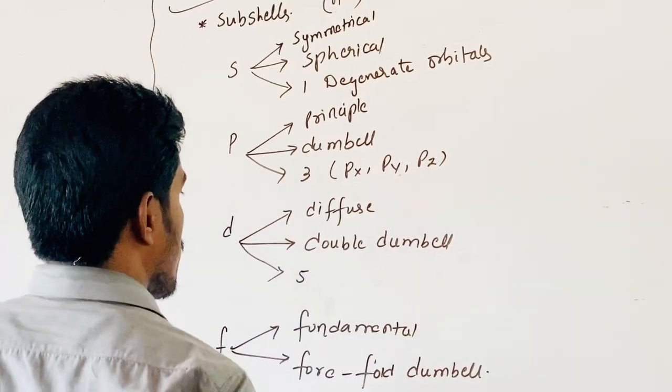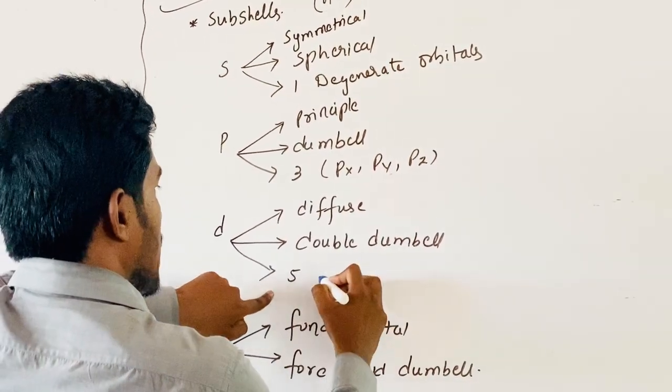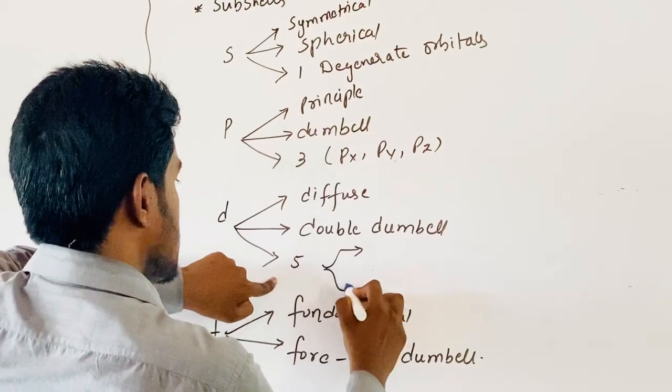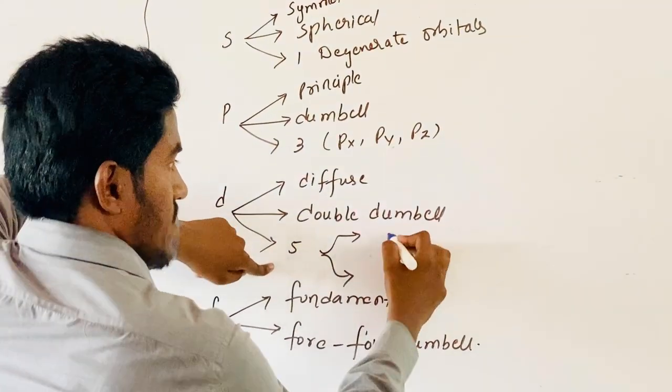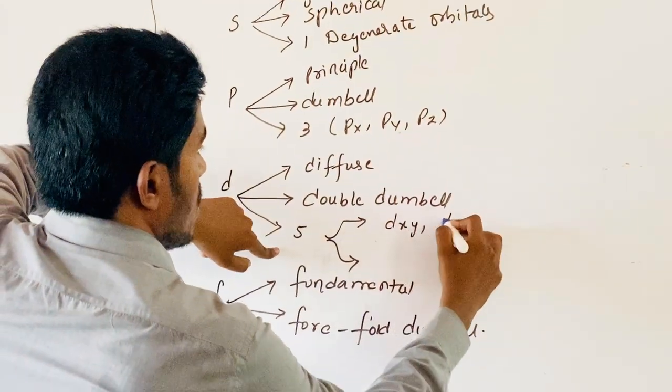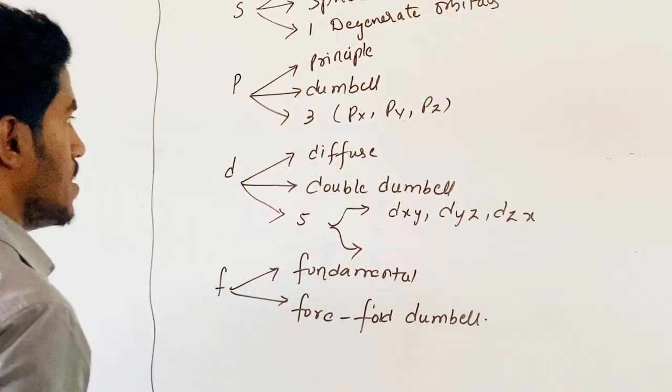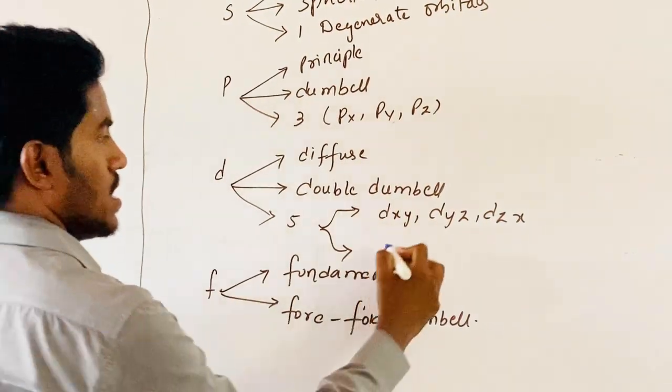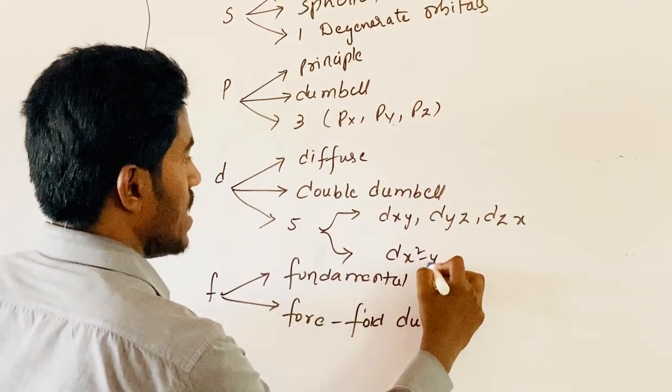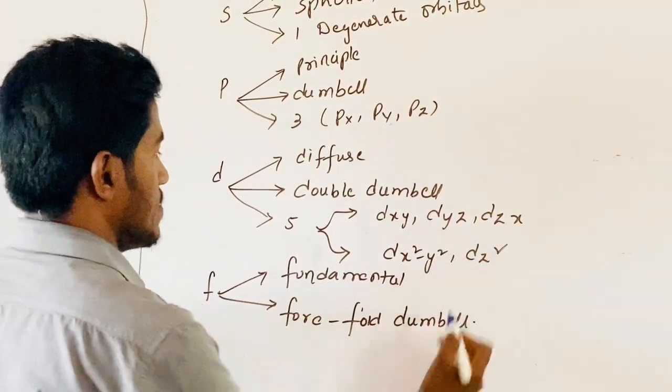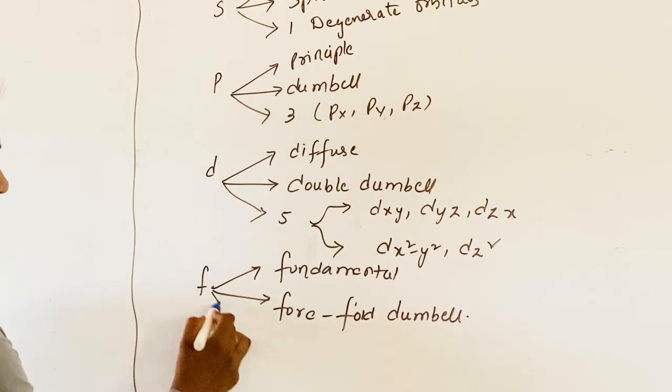D-orbital, totally five orbitals, may be classified into two types. First type: D of XY, YZ, ZX. Second type of D-orbital: D of X-square minus Y-square and D Z-square.